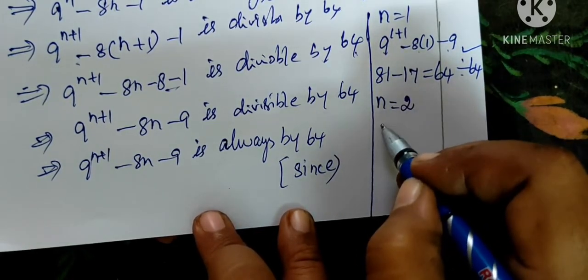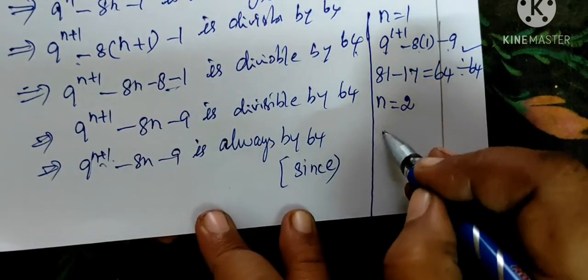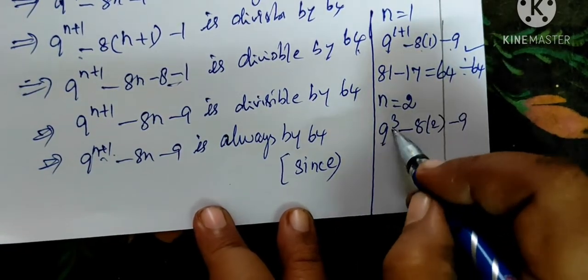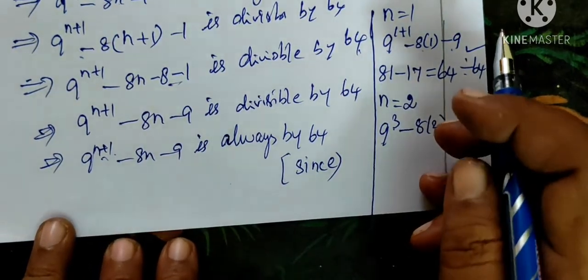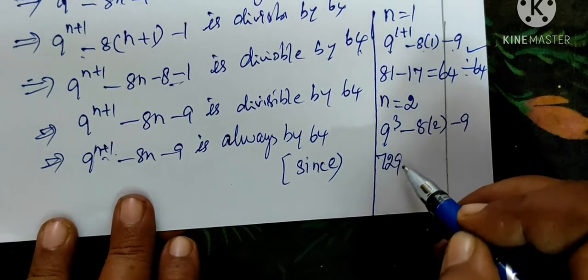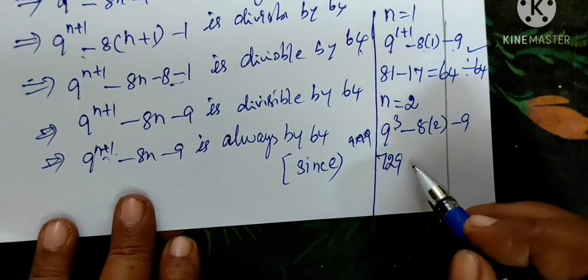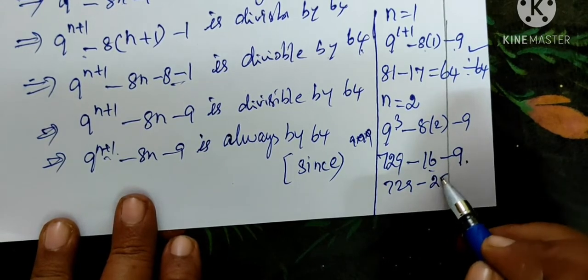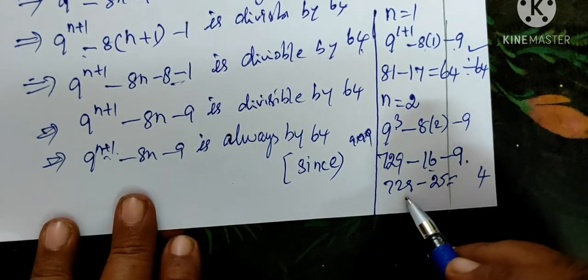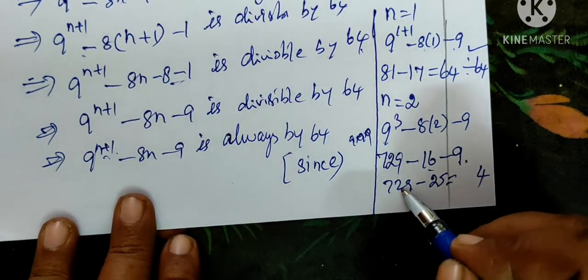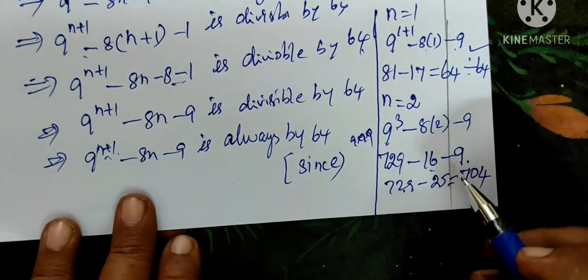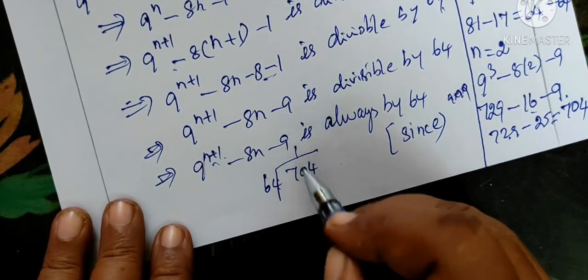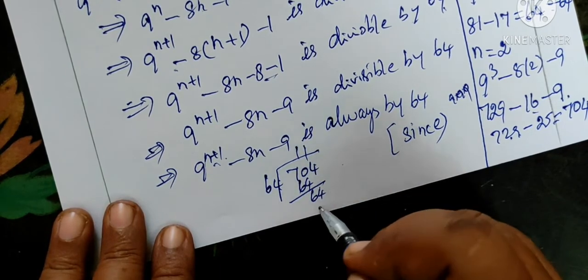For n equals 2, here is 2 plus 1. 9 power 3 minus 8 bracket 2 minus 9. 9 power 3 is 9 times 9 times 9, which is 729 minus 16 minus 9. 729 minus 25 equals 704. 704 divided by 64.